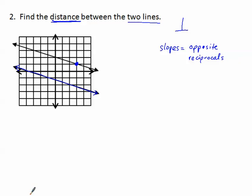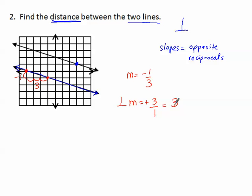I need to calculate the slope of this line. Picking two points: it looks like it crosses here and here, so I calculate a rise of negative one and a run of three — the slope is negative one over three. Perpendicular to that, the slope will be the reciprocal — three over one — and negative turns into positive, so the perpendicular slope is just three. I can count from this point to get to the other line using a slope of three.